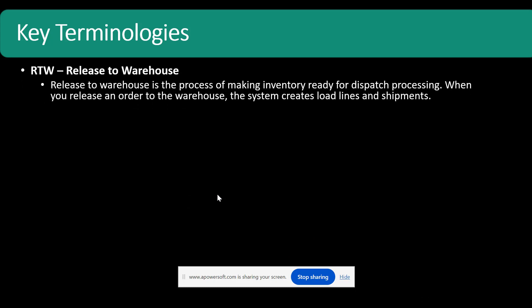Another important concept is RTW — Release to Warehouse. Release to Warehouse is the process of making inventory ready for dispatch processing. Imagine a scenario where you are sitting in a head office processing a sales order, and your warehouse is almost 10 miles away. You are authenticating to the warehouse that this order can be processed for dispatch. The moment you release to warehouse, the order can then be picked, packed, and dispatched. When you release orders to the warehouse, the system creates load lines and shipments. RTW basically means you are authenticating to the warehouse that these order lines can be processed, picked, packed, and dispatched to customers.